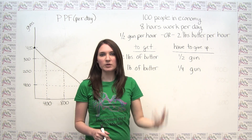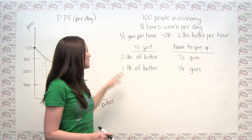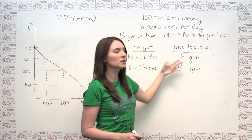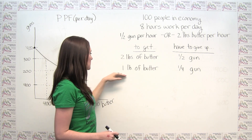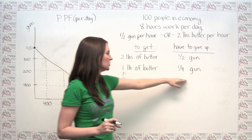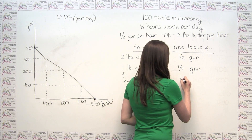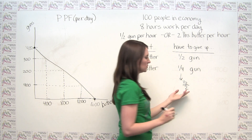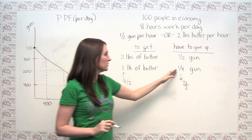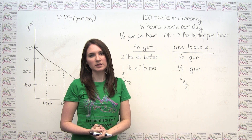We can scale this up or down to think about what the opportunity cost of 1 pound of butter is. We notice that if the opportunity cost of 2 pounds of butter is half of a gun, then the opportunity cost of 1 pound of butter — since this is just 2 divided by 2 — is just going to be 1/4 of a gun, because 1/4 is just 1/2 divided by 2. So now we know that the opportunity cost of 1 pound of butter is 1/4 of a gun, and we want to understand how that relates to the slope of the production possibilities frontier.